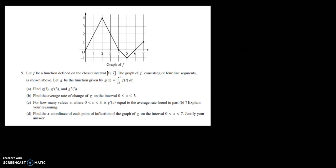In this video we are going to be solving 2003 Form B number 5 Calculus AB FRQ. It says let f be a function defined on the closed interval 0 to 7. The graph of f consists of four line segments.